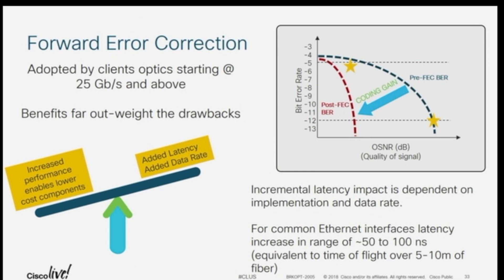Finally, FEC — Forward Error Correction — which I talked about briefly already. There are a lot of advantages. The main one is that you can use lower quality components. Typically, if you want to operate with a bit error rate of 10 to the minus 12, the quality of your signal has to be very high. If you're using FEC, you get this coding gain effect and you can actually operate with lower performance components — for example, if I'm trying to do 100 gig, I don't need components that can do 100 gigabit; I can use lower speed components.